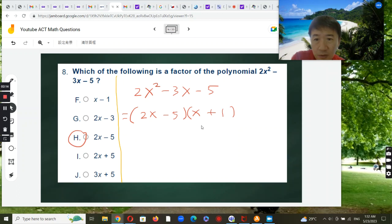Which one do they have? They don't have x + 1, so it must be the other one: 2x - 5. The answer is H.